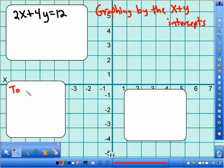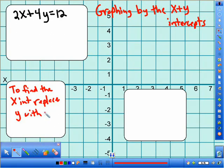To find the X intercept, replace Y with zero, and then solve for X.